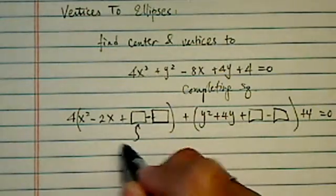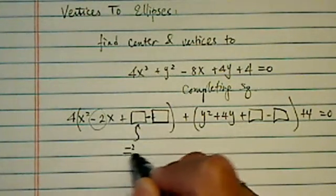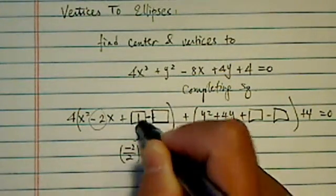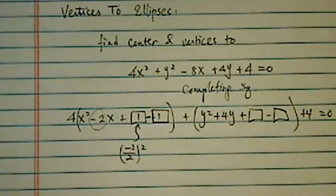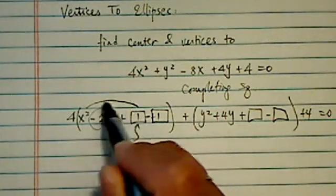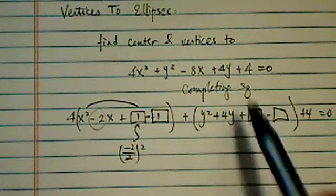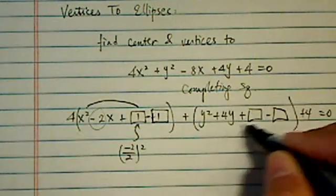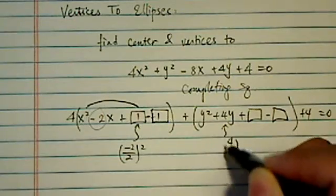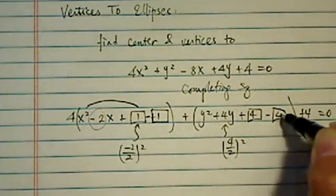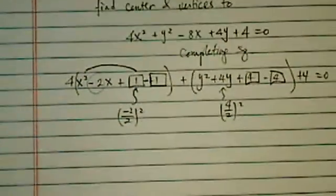And the magic number I want to put in there is whatever this coefficient is, divided by 2 and squared. In our case, it's 1. The reason I want to do that is the first three terms, I'm going to factor into a complete square. Thus, it's called a complete square. Same thing over here, taking this coefficient, divided by 2 and squared, I have a 4. So, so far, so good.